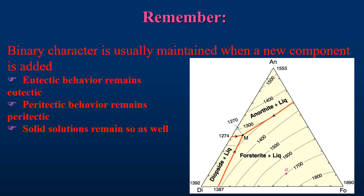In the binary system, each section of the liquidus corresponds to the liquid coexisting with a different solid. The same is true for a ternary system, and each area is labeled with the name of the mineral phases that coexist with the liquid in that particular portion of the liquidus part of the diagram. Peritectic points behave in a similar manner, but only at higher temperatures.